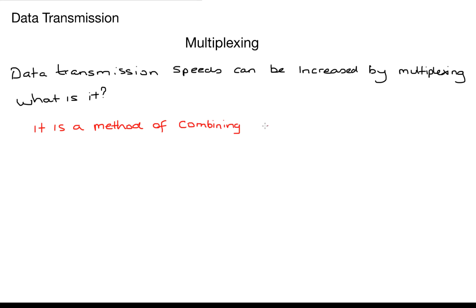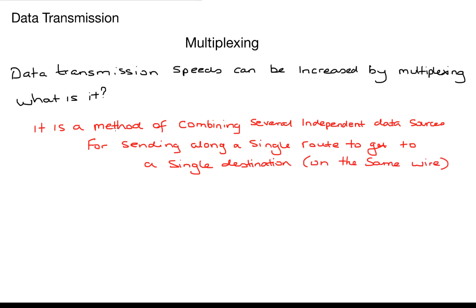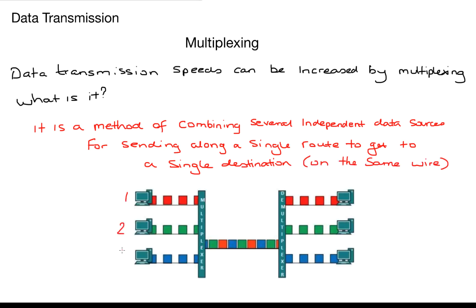It is a method of combining several independent data sources for sending along a single route to get to a single destination and this is usually done on the same wire. So as you can see from the diagram we've got three independent data sources. We send them and combine all the signals onto one transmission medium and then we demultiplex at the end and send them to the relevant destinations.